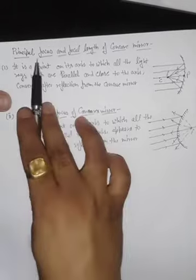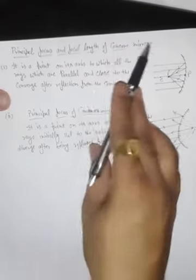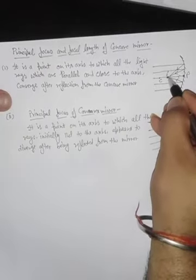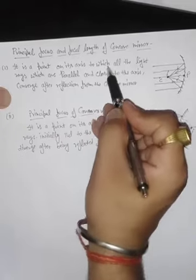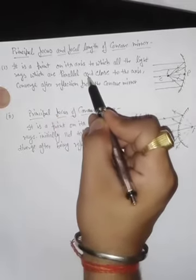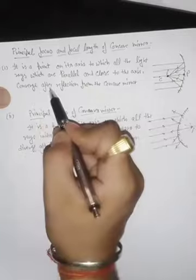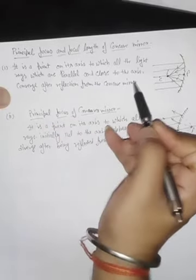What is the principal focus of a concave mirror? The principal focus of a concave mirror is a point on its axis to which all the light rays that are parallel and close to the axis converge after reflection from the concave mirror.